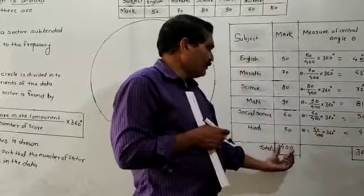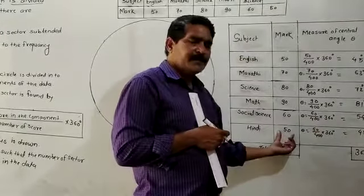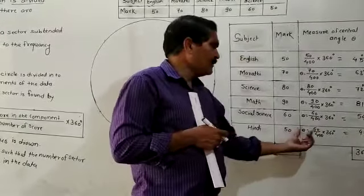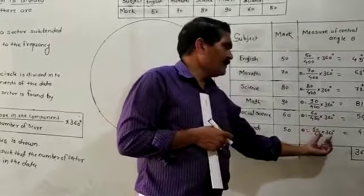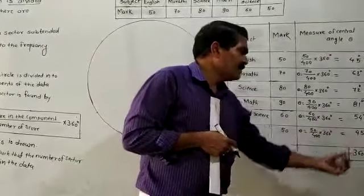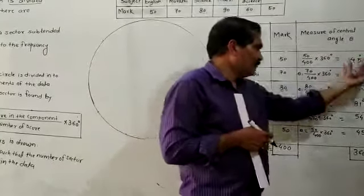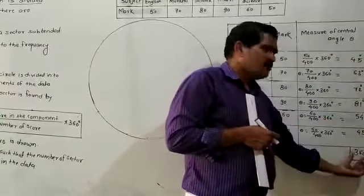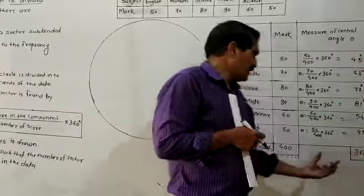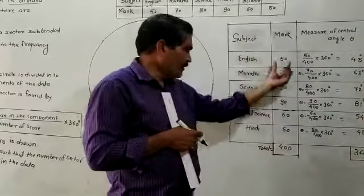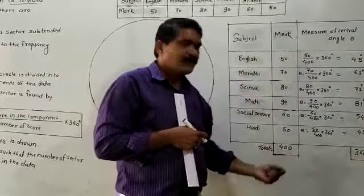Out of 400 marks, 50 marks in Hindi: (50/400) × 360 = 45 degrees. The sum of all central angles is 360 degrees, and the sum of all frequencies is 400.